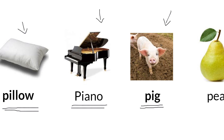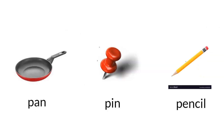Okay, do you know what this is? Yes, it's a pear. Say after me. Pear. Okay, do you know what this is? Pan. Pan. How about this one? Pin. Pin.